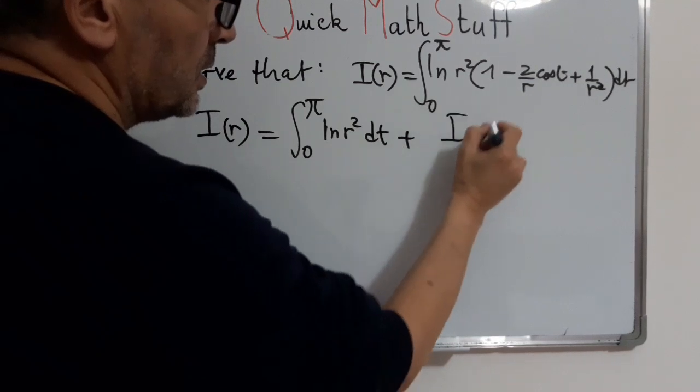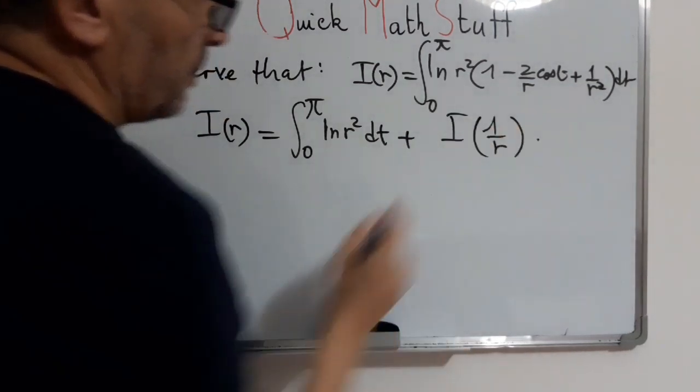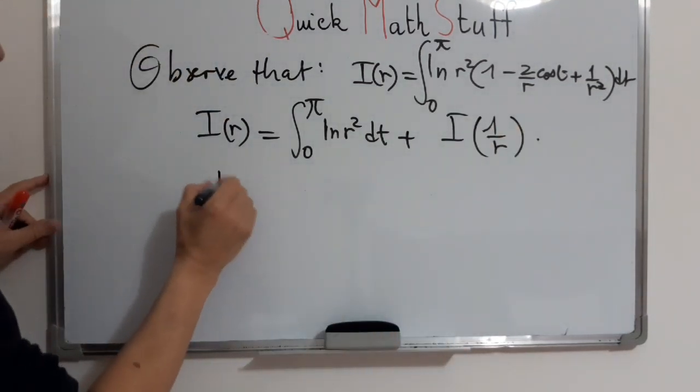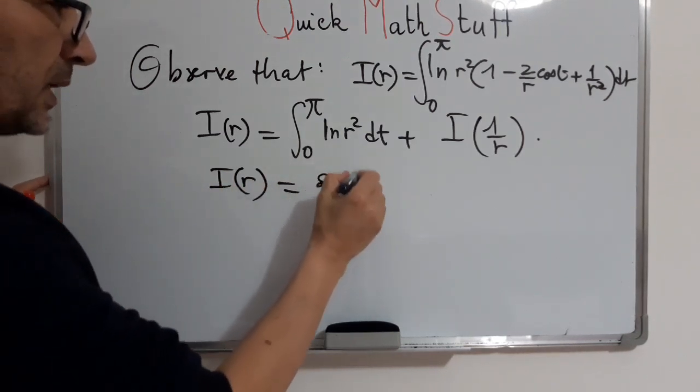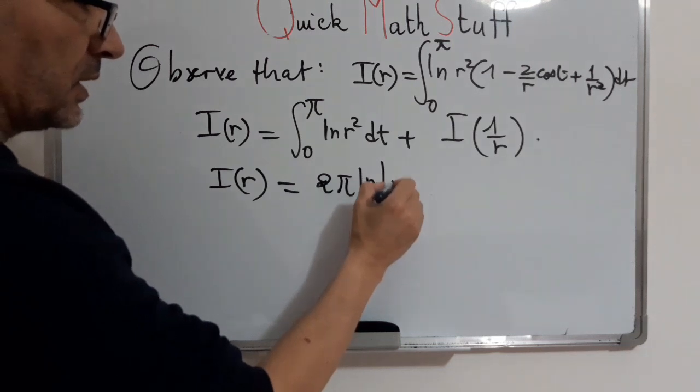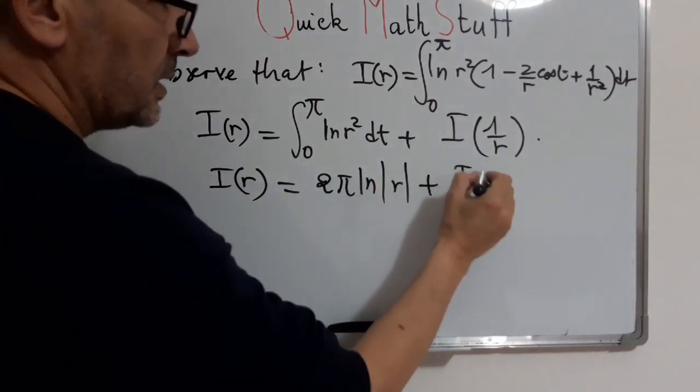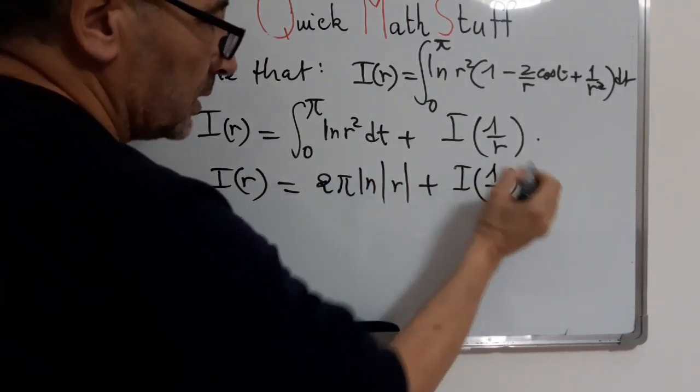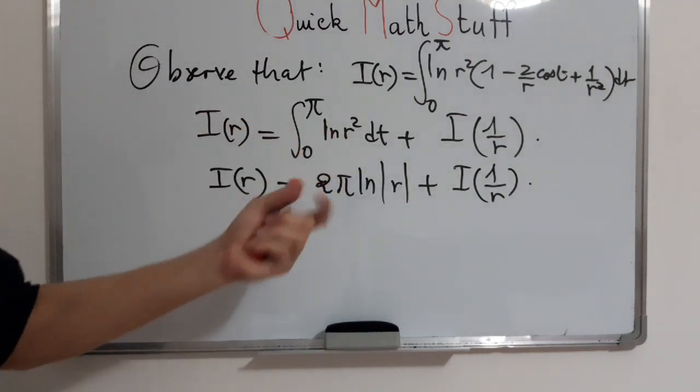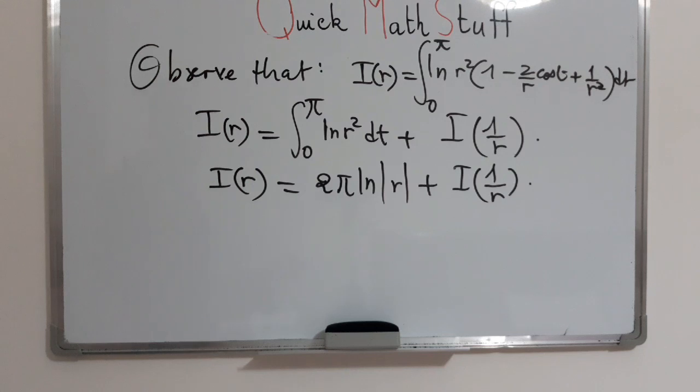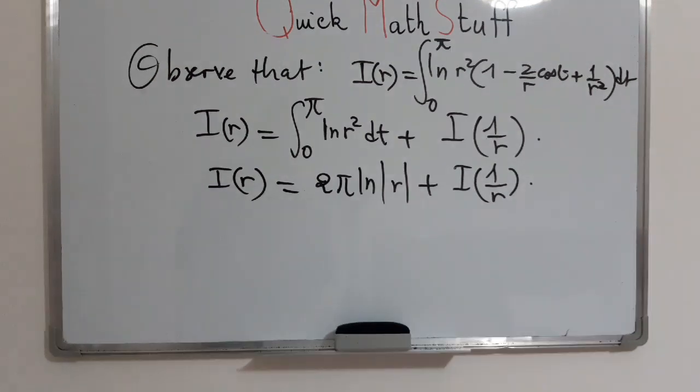plus I of 1 over r. So I of r will be equal to 2π ln of absolute value of r plus I of 1 over r. Now it's an interesting relation. Please take a few minutes to finalize this one.